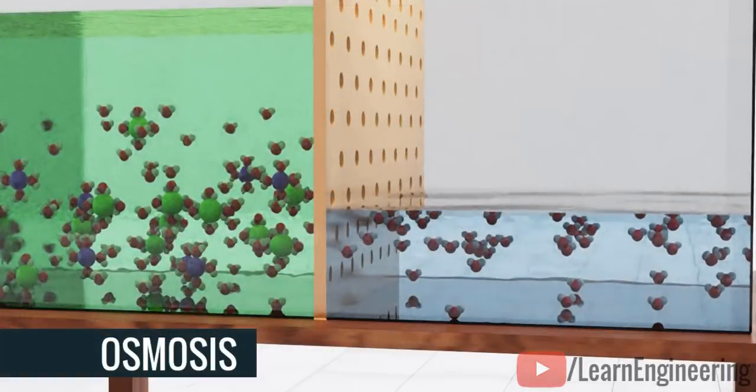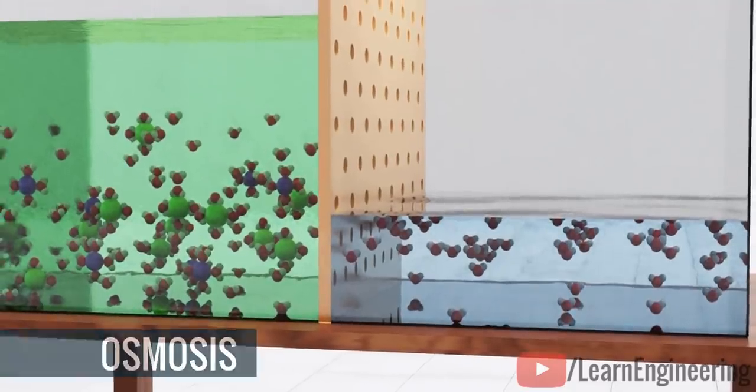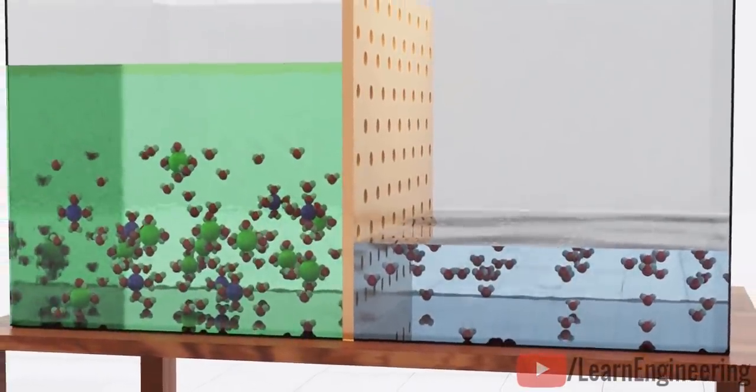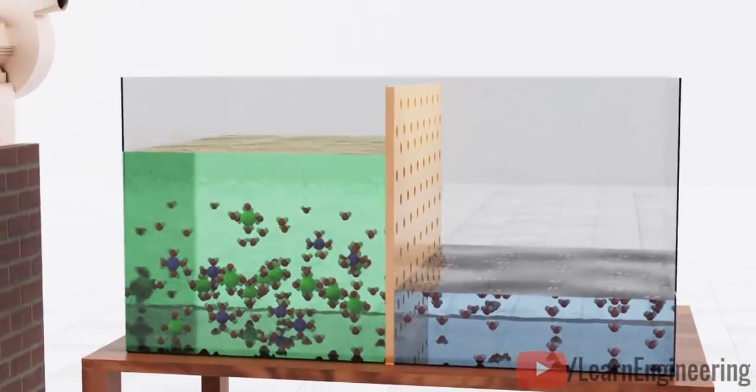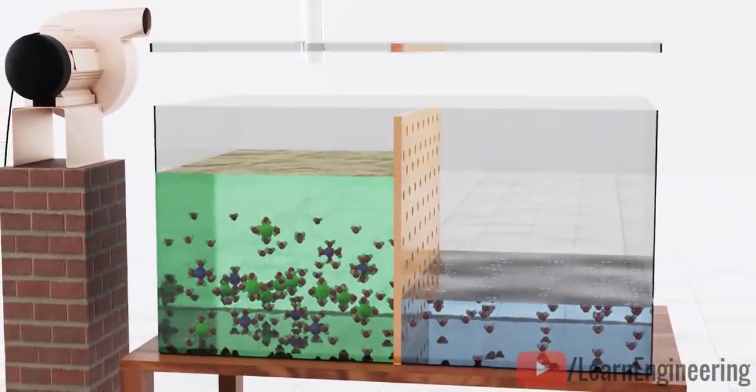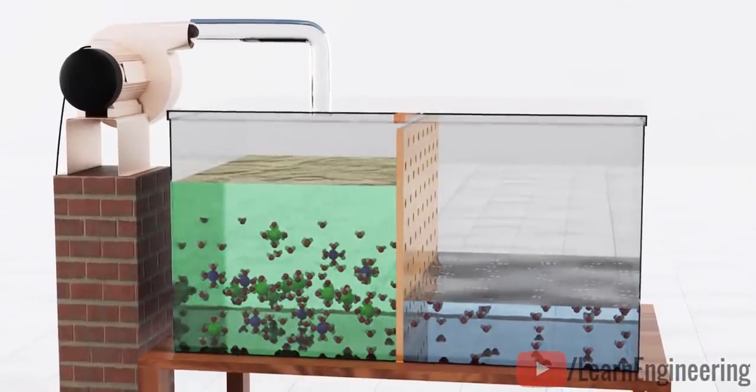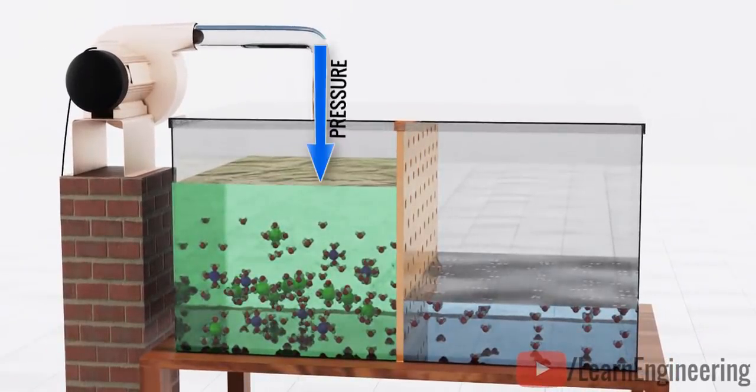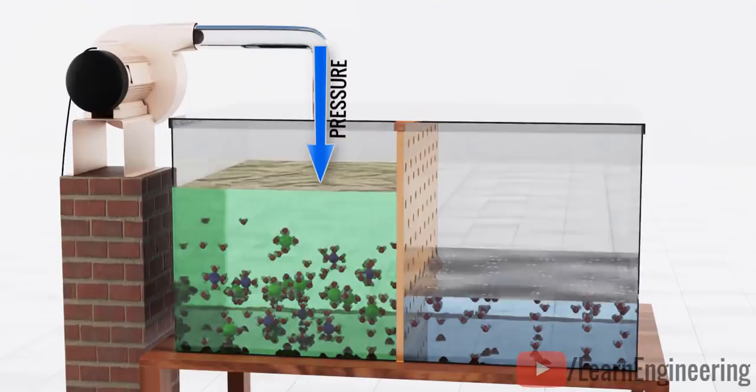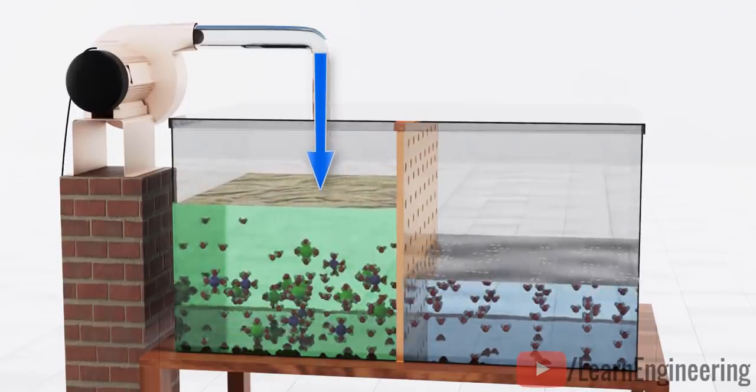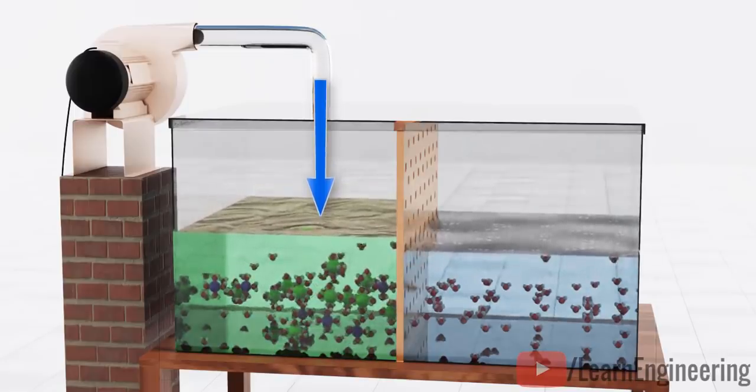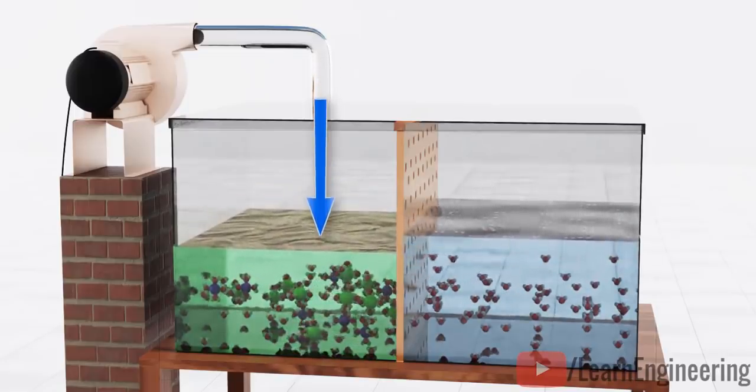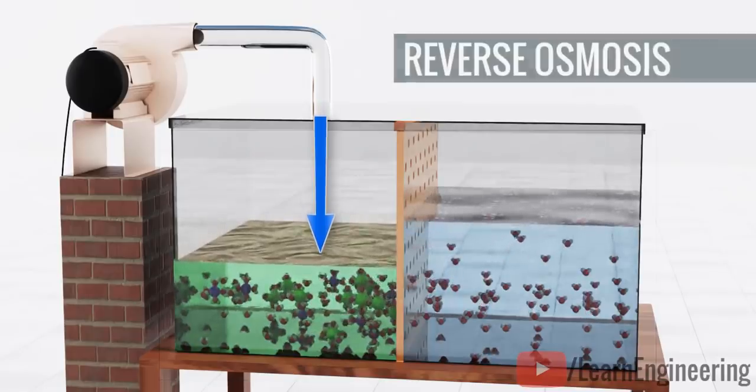We definitely don't want this result. What we need is the exact reverse of this process. Water molecules from the left side should migrate to the right side. So, what can we do to get pure water? We can apply good pressure on the salt water side. The increased pressure will force the water molecules in the salty side to migrate to the clean water side. Obviously, the semi-permeable membrane blocks migration of salt ions. This method is known as reverse osmosis.